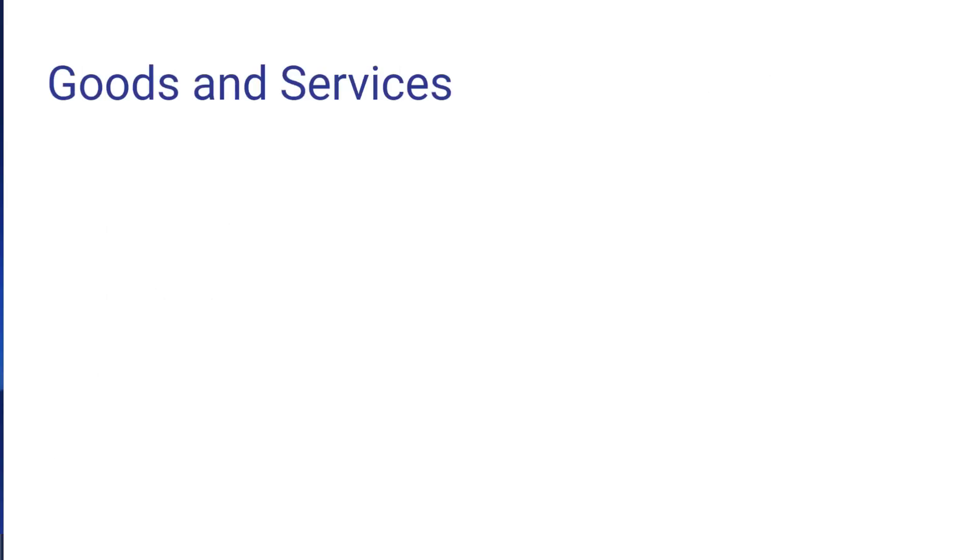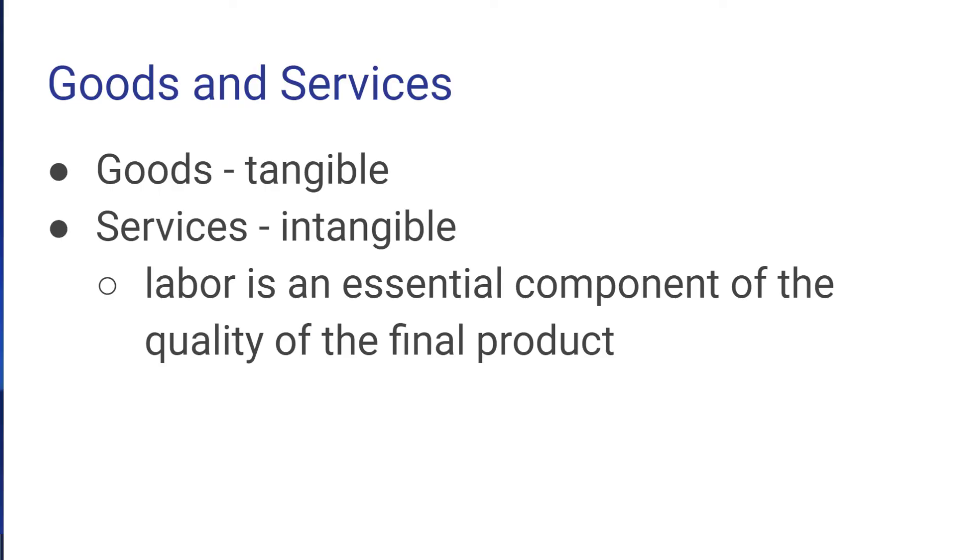We should also talk about the distinction between goods and services. Goods are tangible objects, things that you can hold and touch. Services are intangible. An important component of services is that labor is an essential component of the perceived quality of the product. As an example, suppose that you go to a grocery store and you buy a bag of apples. The apples would be a good. If you go to a restaurant and buy a meal, the meal itself would be a good, but the acts of cooking the meal, preparing it, serving it at the table, and cleaning up would be a service. Many of the things we buy actually involve a mix of goods and services. Legal services would be another example of a service. Medical services would be another example. In general, goods are things that we can touch and hold. Services are things that involve other people doing some labor to assist you, either in person or perhaps virtually.